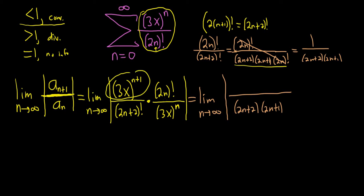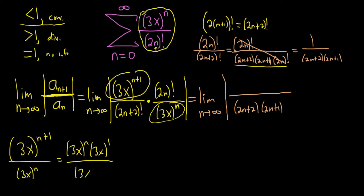Now let's deal with the 3x's. So 3x to the n plus 1 over 3x to the n. I'll do that down here on the bottom left. So this is the same thing as 3x to the n times 3x to the 1 over 3x to the n. And they cancel so you just get 3x. Really, really clean. So 3x.